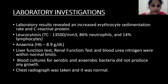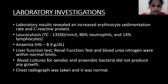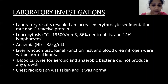Laboratory investigations revealed an increased erythrocyte sedimentation rate and increased C-reactive protein. The patient had leukocytosis with a total count of around 13,500 with 86% neutrophils and 14% lymphocytes. The patient also had mild anemia with hemoglobin of around 8.9 grams per deciliter, whereas liver function tests, renal function tests, and blood urea nitrogen were within normal limits. Blood culture for aerobic and anaerobic bacteria did not produce any significant growth. A chest radiograph was taken and it was normal.